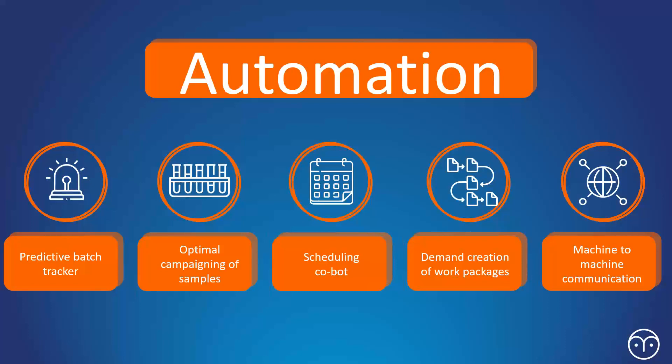Really, it's down to these maybe five pieces of automation and maybe other reasons as well, but certainly, these are the main drivers of the improvements. You know, predictive batch tracker, which we look at in a second, the optimization of campaigns, the scheduling cobot, which allows us to essentially manipulate our schedule with very little work with the click of a button. Demand creation of work packages, which we look at in a second as well, and machine to machine communication.